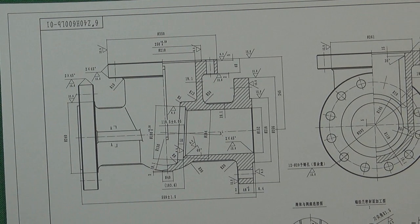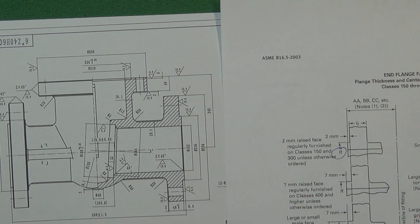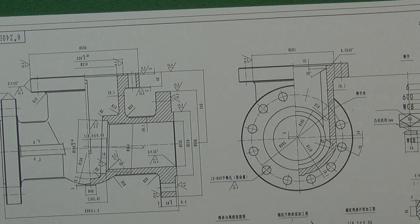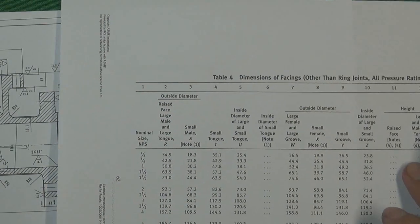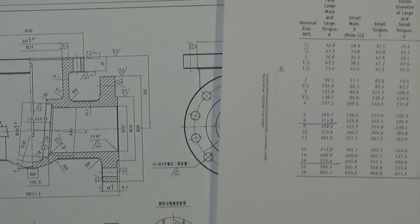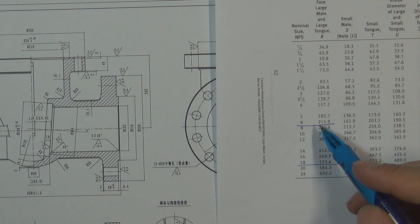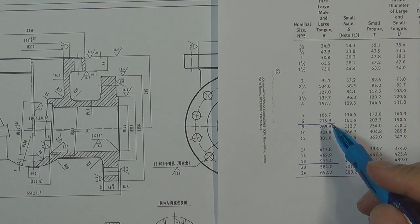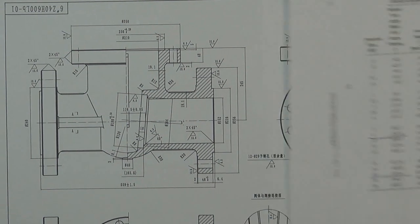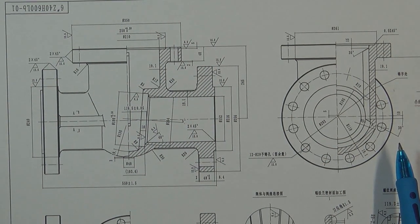Next is for the step for the gasket. We use R to represent this dimension. We go to the diameter of facing table, which applies to any kind of flange for any pressure class. For 6 inch, the step diameter is 215.9 mm, approximately 216 mm — correct. So this blueprint flange was also designed by ASME B16.5.